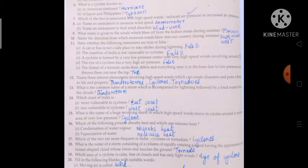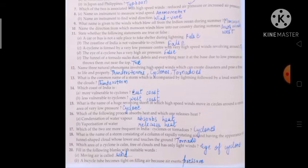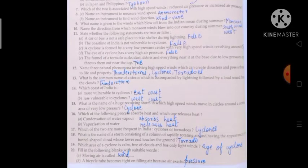Nineteen: which area of a cyclone is calm, free of clouds and has only light winds? Answer is eye of cyclone. Now let's proceed to question number twenty: fill in the blanks with suitable words.